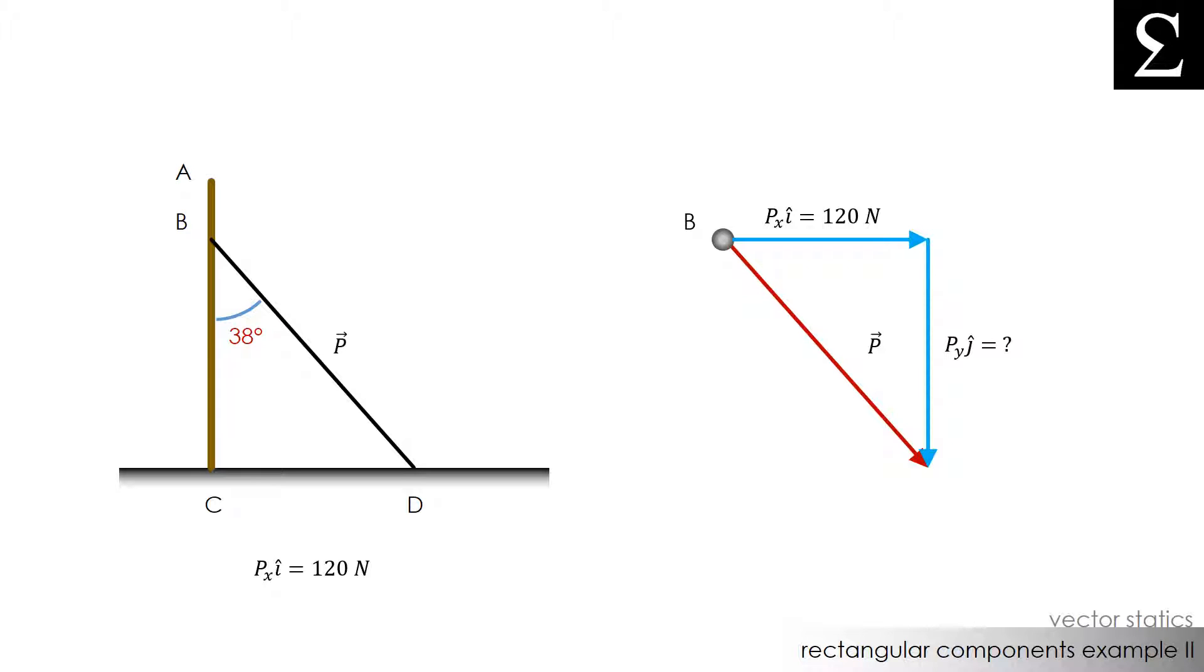We don't know what the value of this component is right now, but we do know that these two components of P make a triangle, which is something we can work with. Finally, since this angle here we know is 38 degrees, we can easily calculate this angle to be 52 degrees.